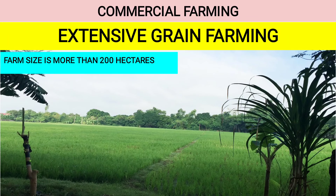This video is part number 4 of the lesson on agriculture, and I will be explaining commercial farming. In the previous video, we already studied subsistence farming, covering intensive agriculture and shifting cultivation. Now let us go to commercial farming. The first type is extensive grain farming.